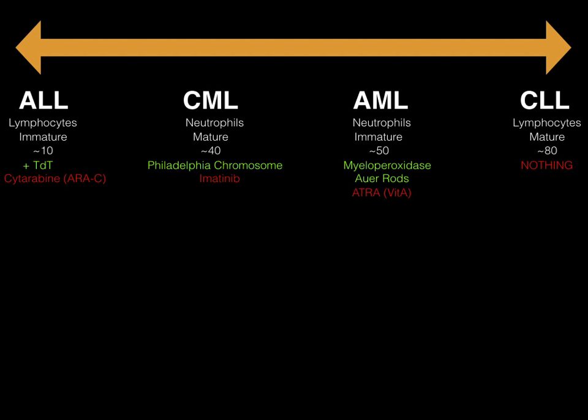The other key point is the age at which people typically get these diseases. Starting from the left and working right, patients increase in age. ALL typically affects children around age 10. CML typically affects young adults around age 40. AML affects older adults between ages 50 and 70. CLL affects very old people usually around age 80 — hence they die with it and you don't treat them. If you're stuck on a USMLE or COMLEX question with no idea, you can make a guess based on the patient's age alone.